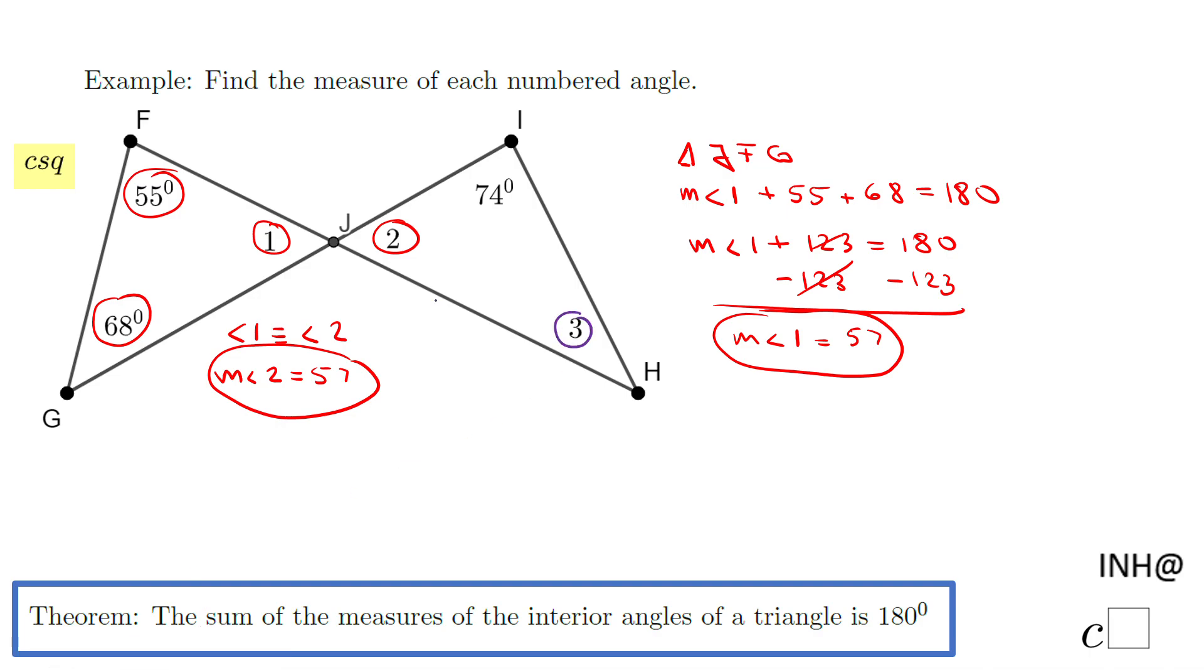is right here. But again, remember this one is 57, so we can move to the other triangle, triangle JIH. And in that triangle we're going to use the same theorem, which says the sum of the measures of the interior angles of a triangle is 180. So we have the measure of angle 3, the one we need to find out,